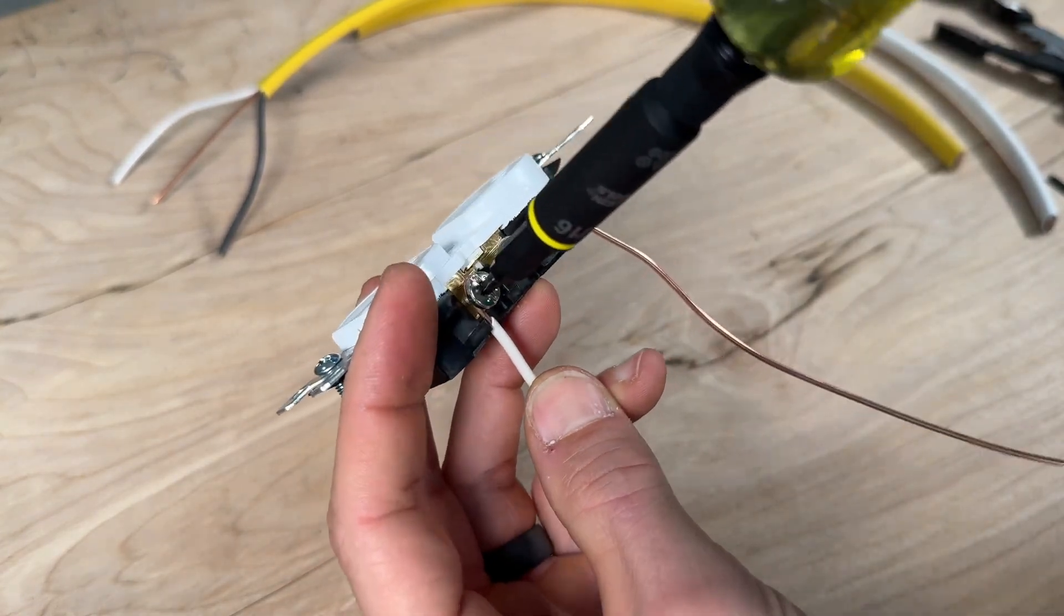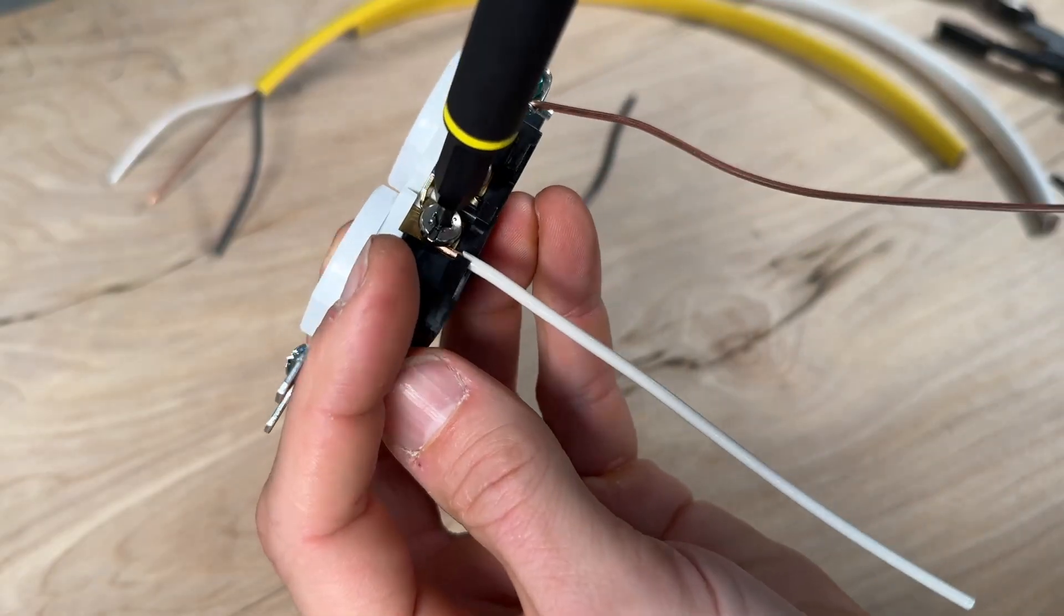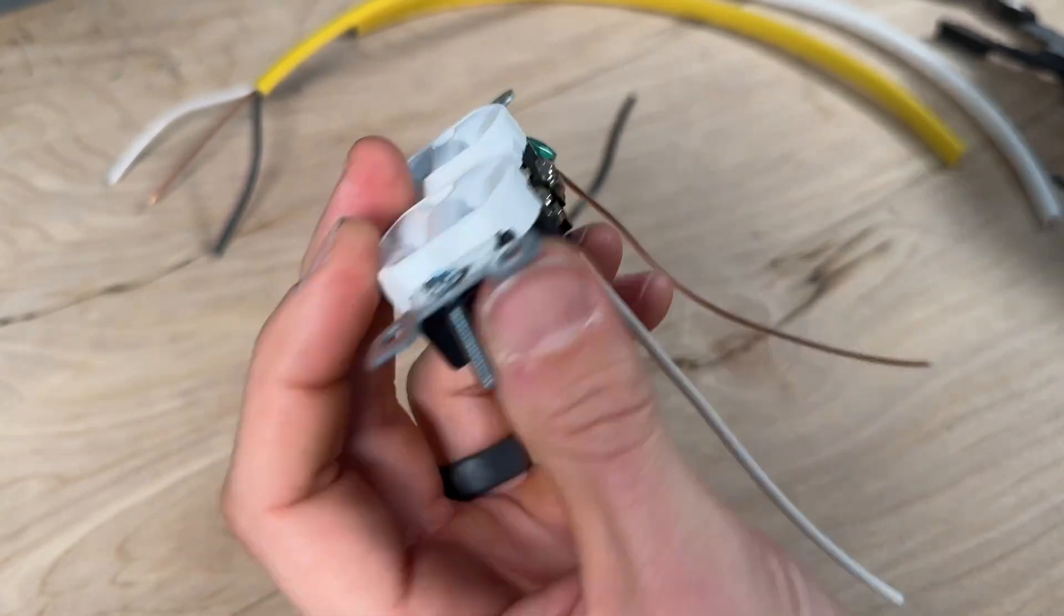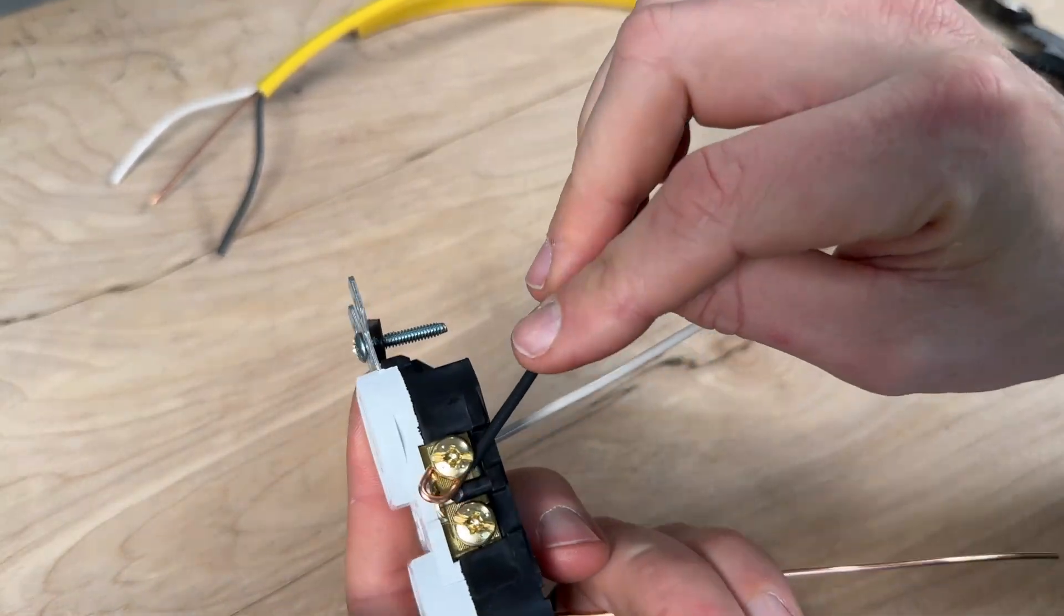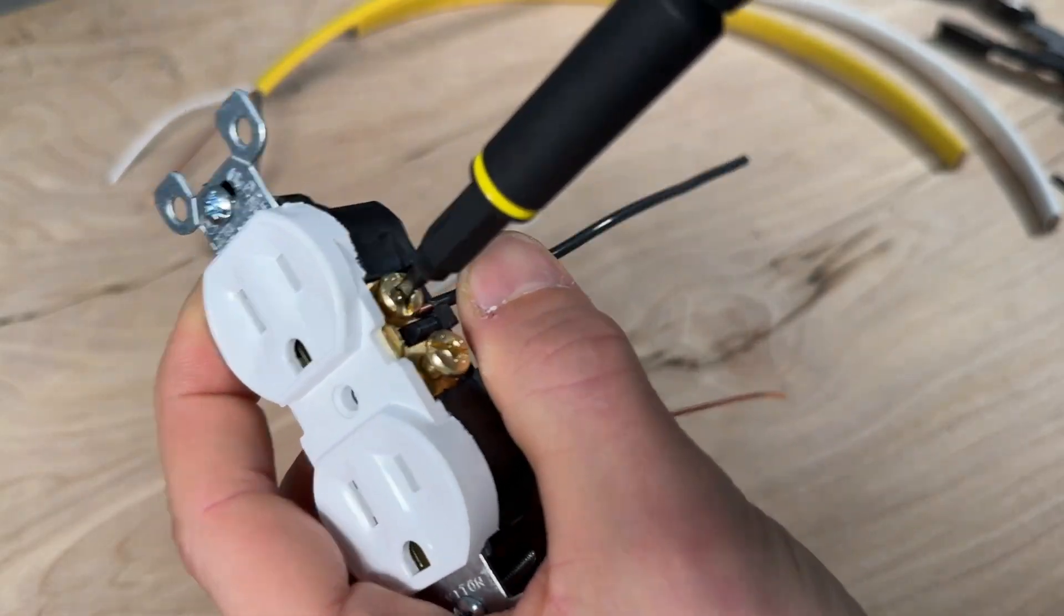We'll do the same thing here for our neutral on our silver screw terminal, again keeping it down and making sure it pulls tight to the screw terminal. Then you'll finish off with your hot side and the black conductor in the clockwise direction with your number one Robertson, tightening that down.